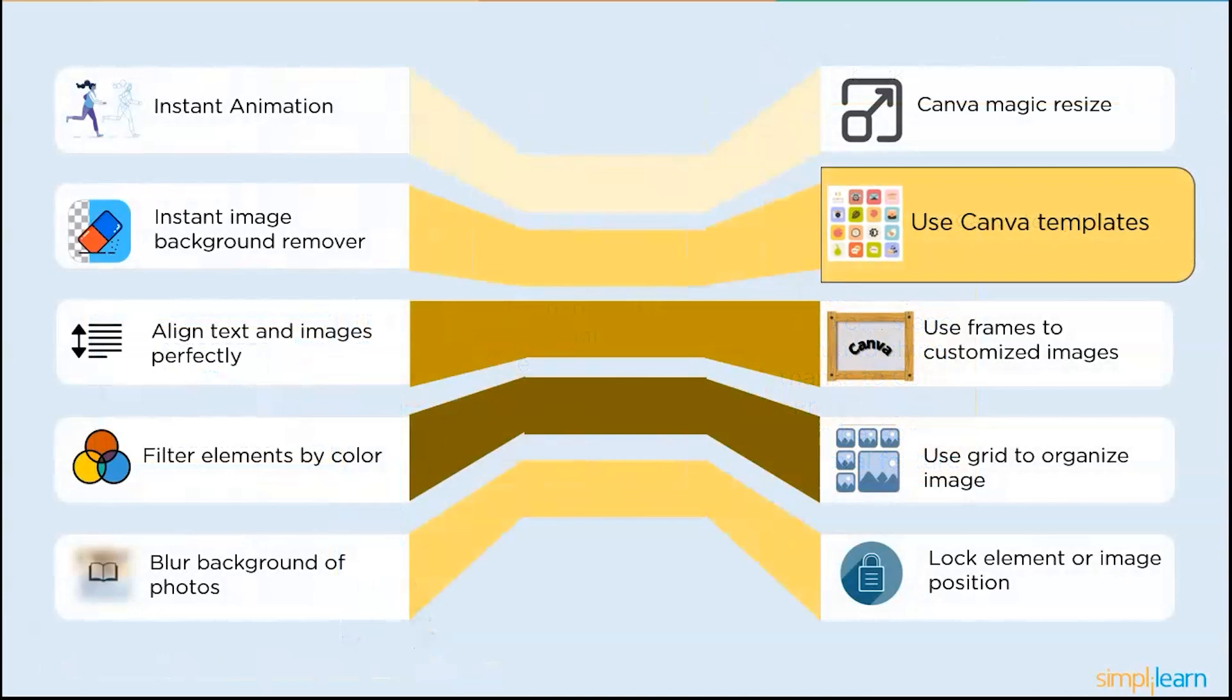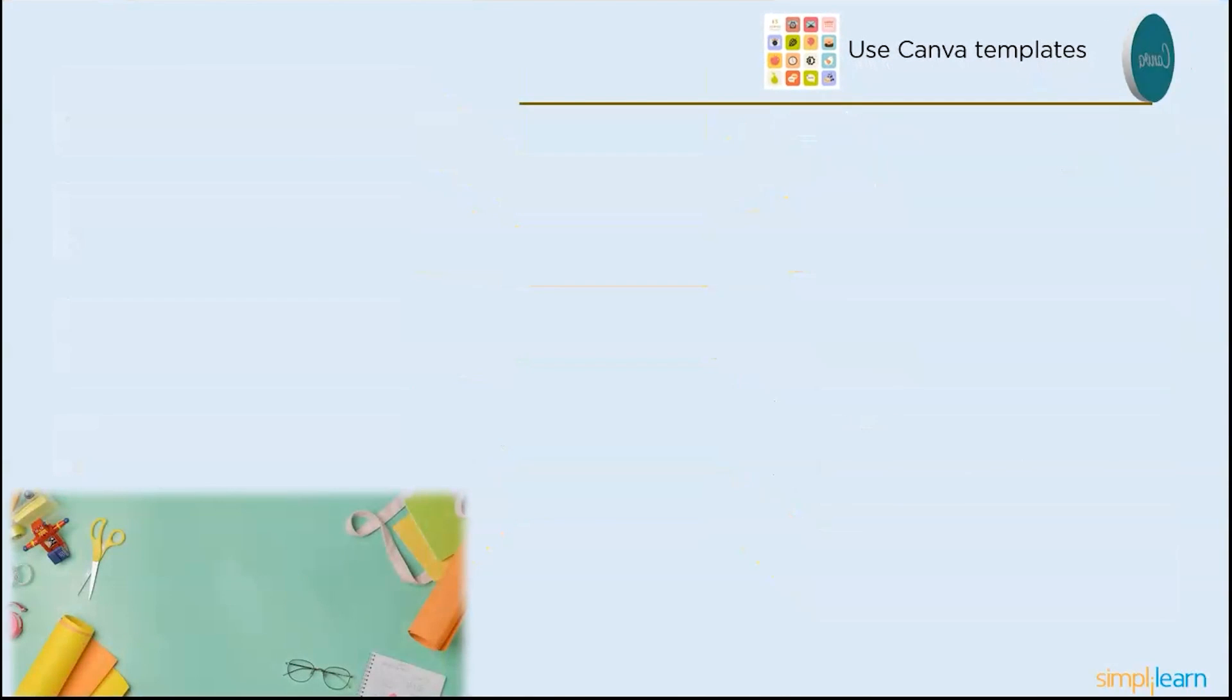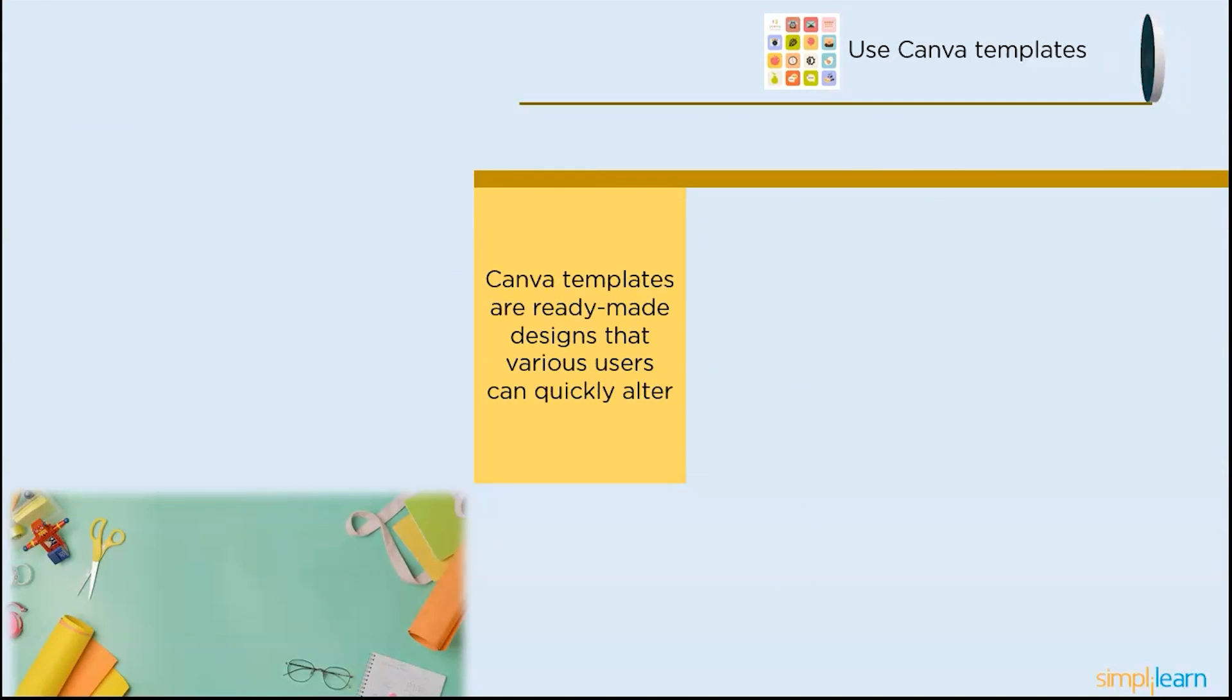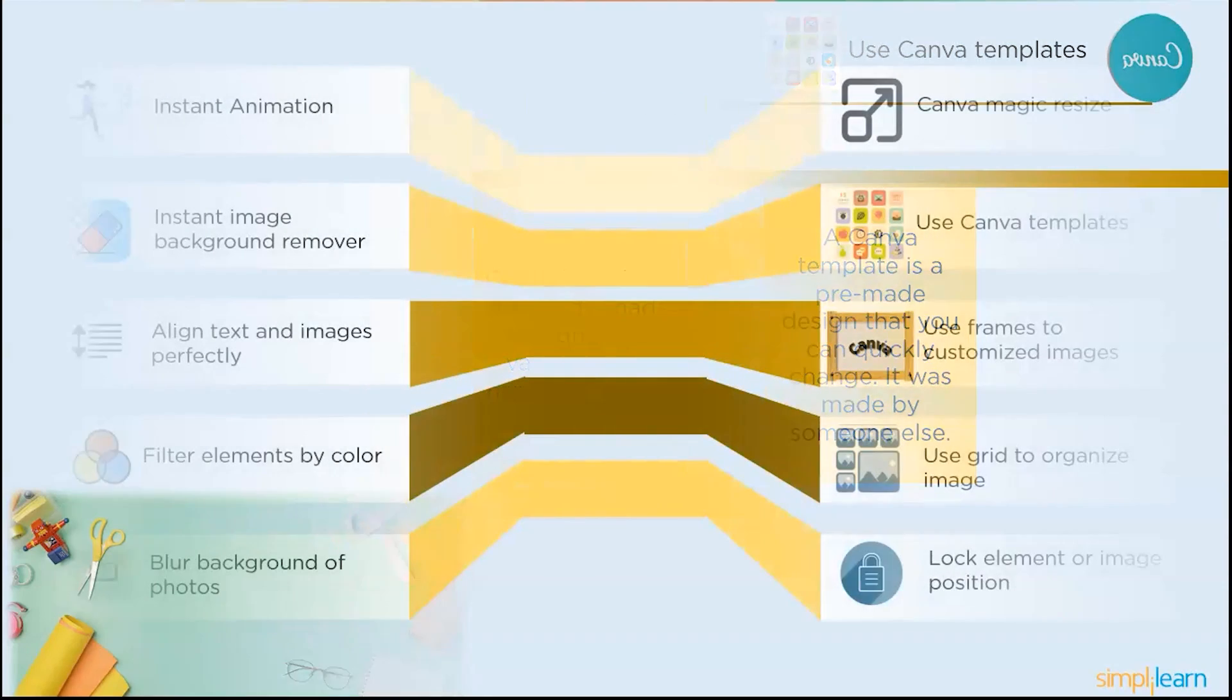And the next one is use Canva templates. Canva templates are ready-made designs that various users can quickly alter. You may buy Canva templates on third-party websites that digitally market goods, including online stores. Canva templates is a pre-made design that you can quickly change. The design framework already exists, but you may add your own creative touch by altering the colors, fonts, and other components.